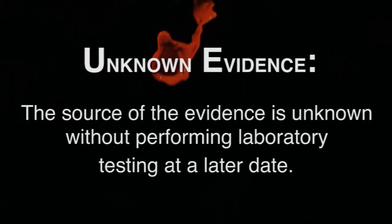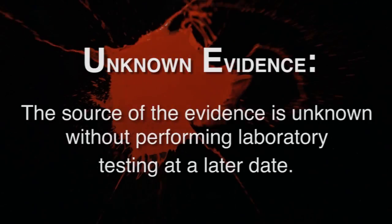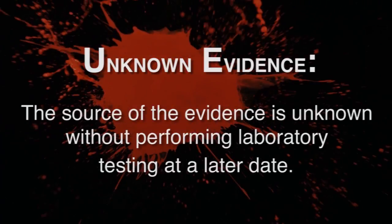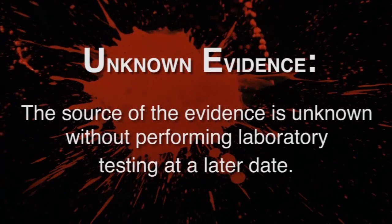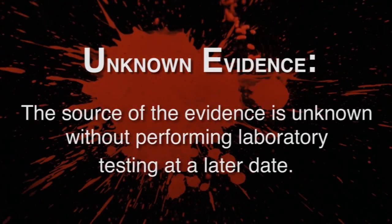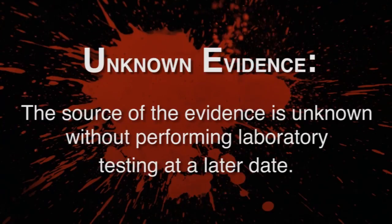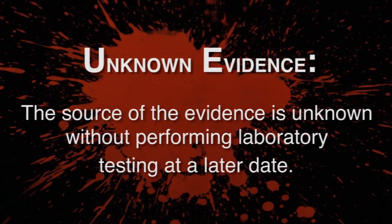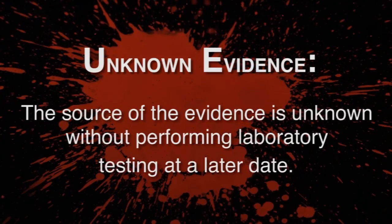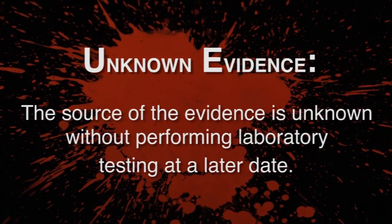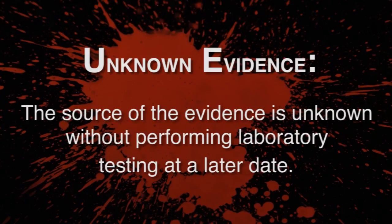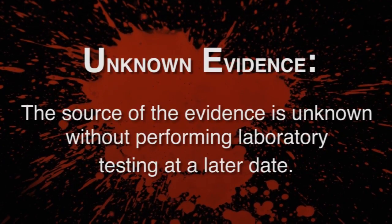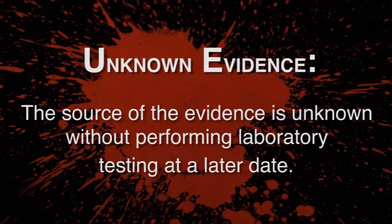Unknown evidence is when you do not know the source of the evidence without performing laboratory testing at a later date. Examples of this would be blood spatter evidence at the crime scene — you only know whose blood it is after you do DNA testing back at the lab.